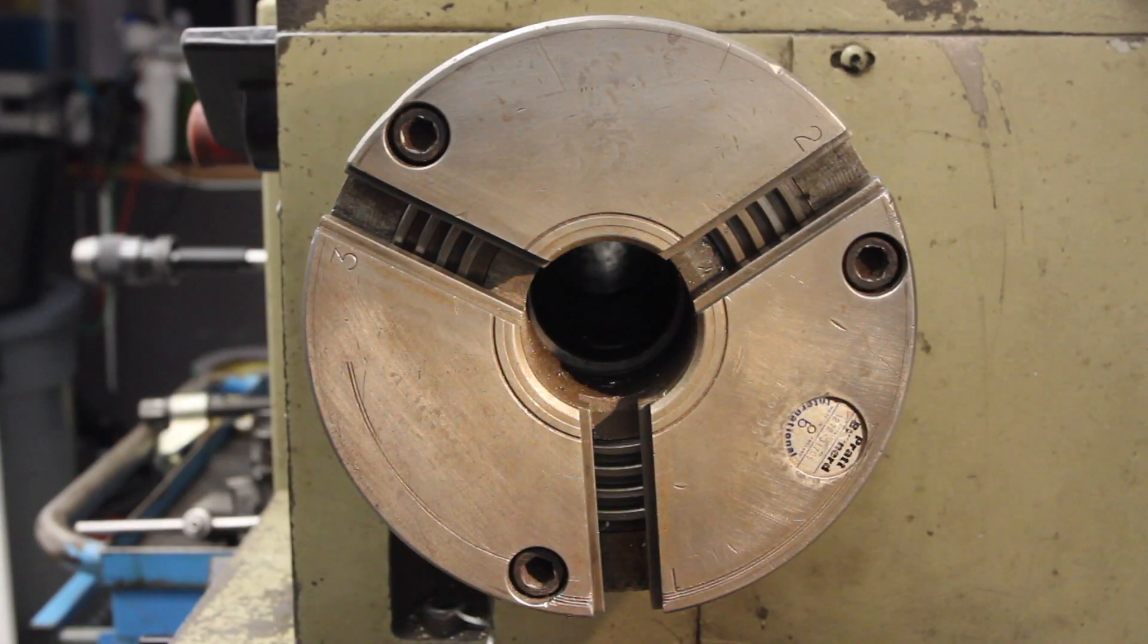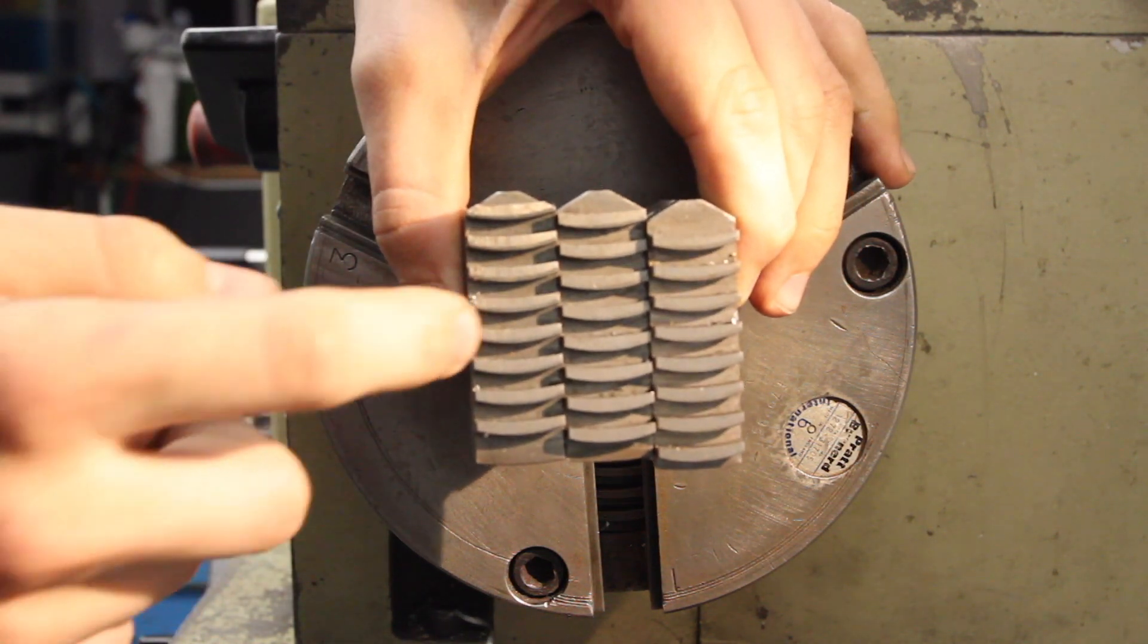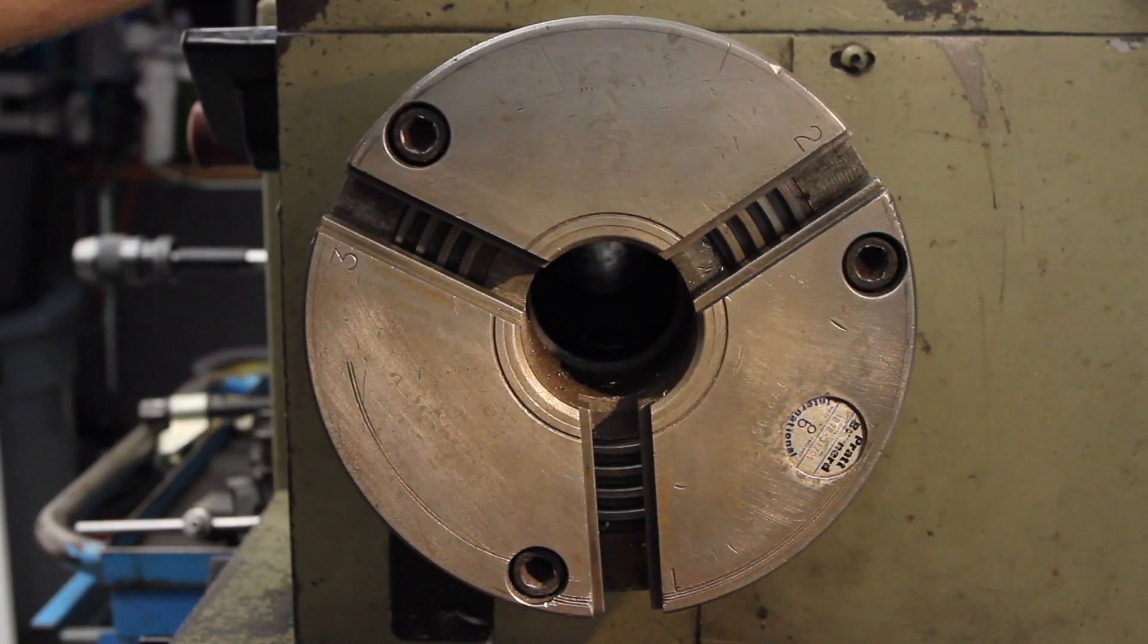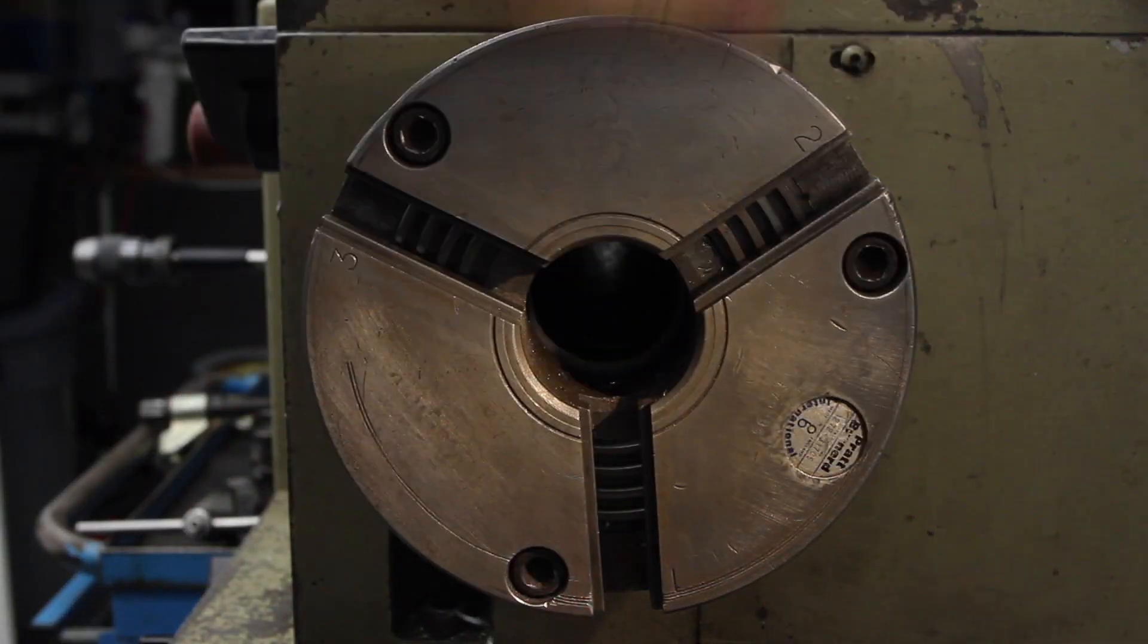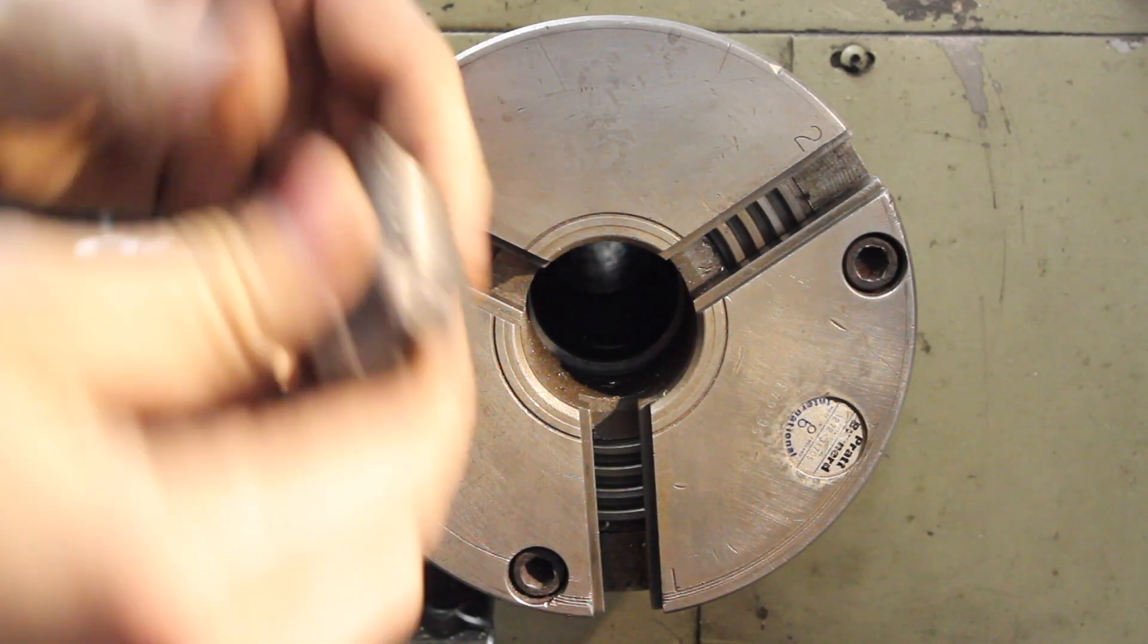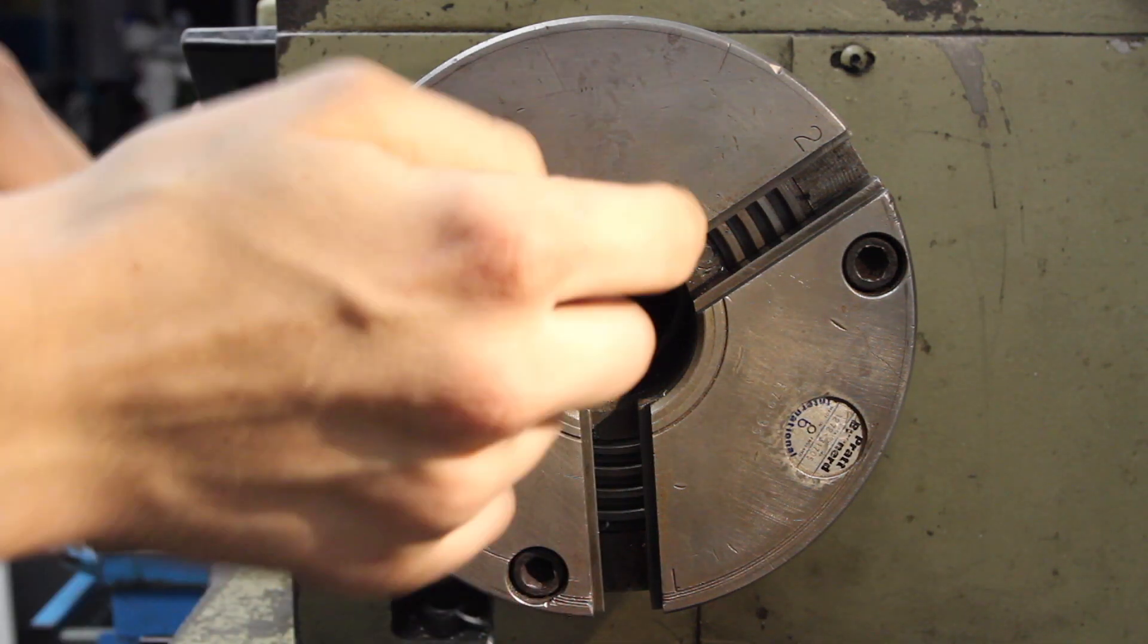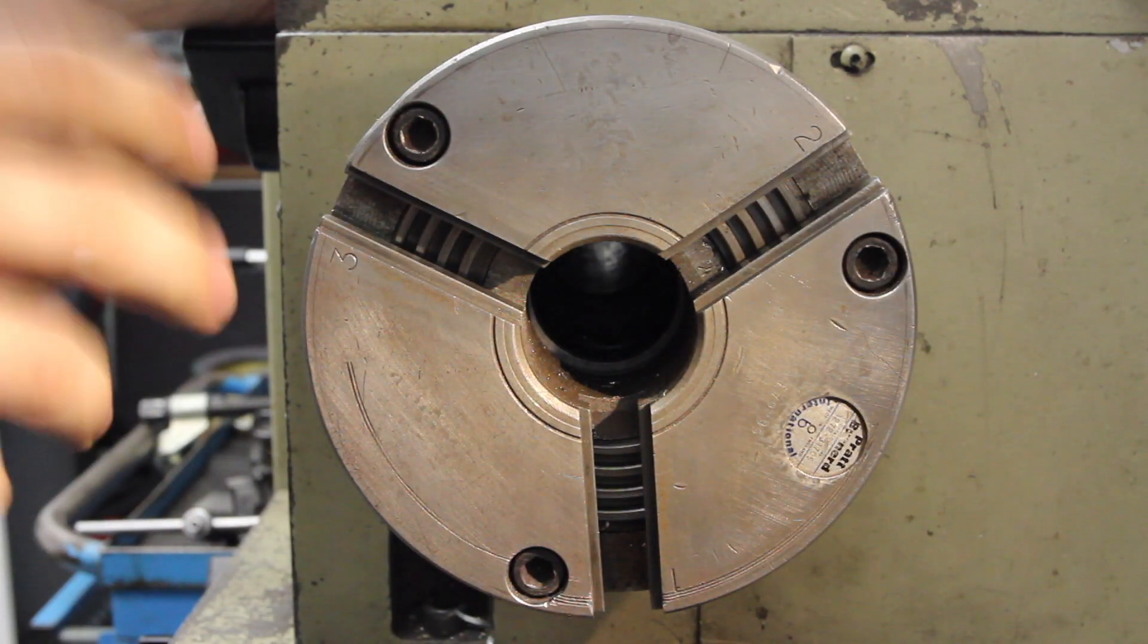So when it comes to putting in your jaws, you've identified which ones are what: one, two and three. Some chucks don't have numbers, mine does, but you can ignore those, they don't mean anything really. Normally I would go one and one, two and two, whatever. It doesn't matter where you start, just as long as you put jaw one in first.